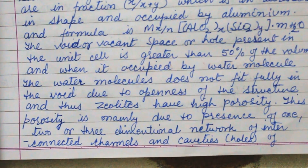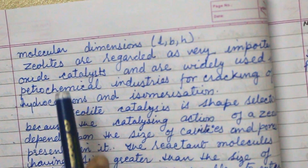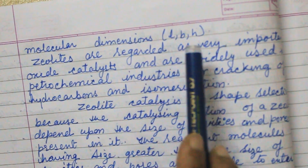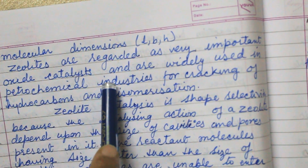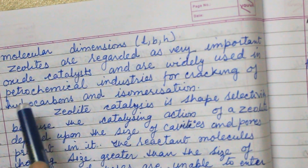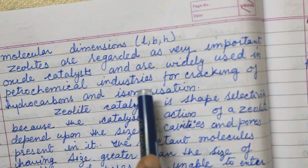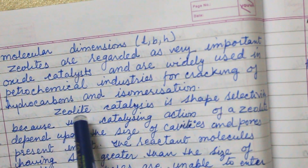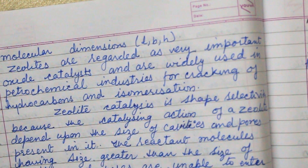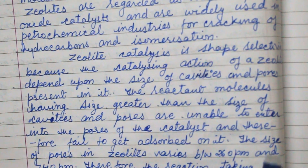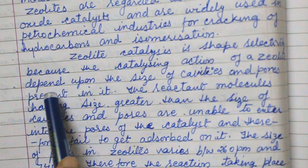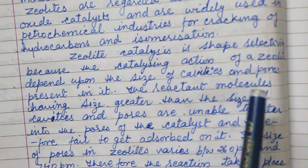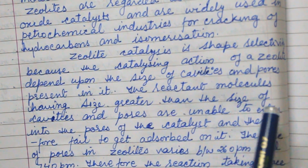This porosity is mainly due to the presence of one, two, or three-dimensional networks of interconnected canals and cavities — that is, holes of molecular dimensions (length, breadth, and height). Zeolites are regarded as very important oxide catalysts and are widely used in the petrochemical industry for cracking of hydrocarbons and isomerization. Zeolite catalysis is based on shape selectivity because the catalyzing action depends upon the size of the cavity and pores present in it.